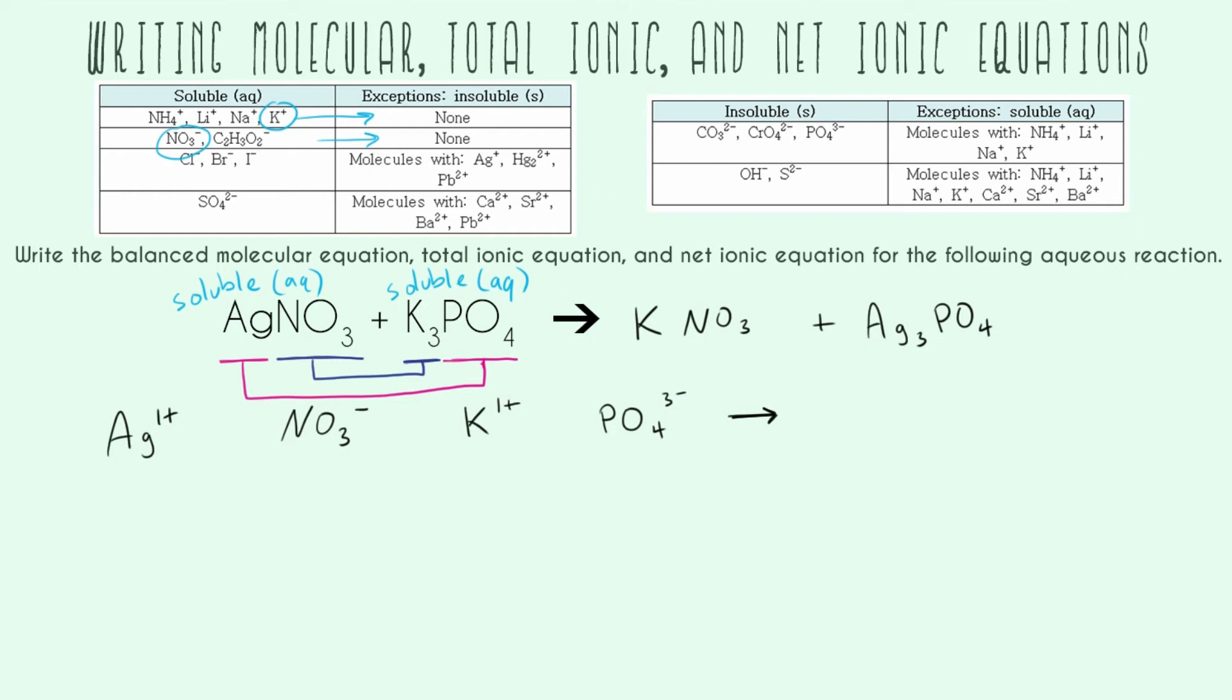Now we can do KNO₃, potassium nitrate. Once again, both potassium and nitrate are soluble and there are no exceptions, so this is definitely soluble and aqueous. Lastly, we have silver phosphate. Phosphate is over here - it is insoluble but has some exceptions. Let's check the exceptions.